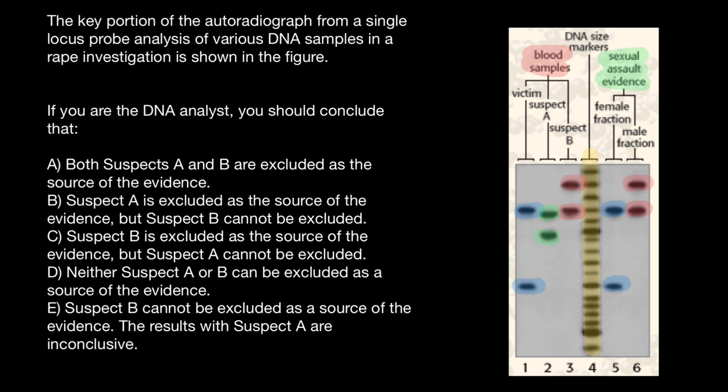So now we can choose the correct answer. It's going to be answer B. Suspect A is excluded as a source of the evidence, but suspect B cannot be excluded. Again, it doesn't prove that he performs a sexual assault. He just cannot be excluded, but person A is excluded.